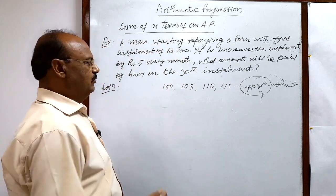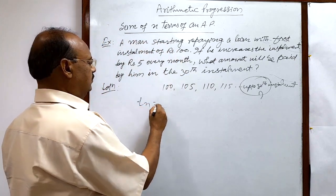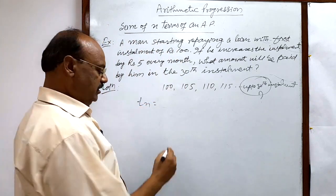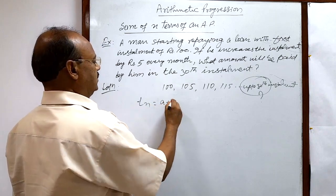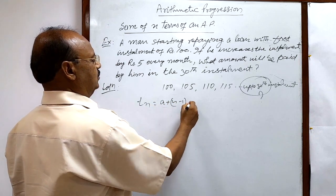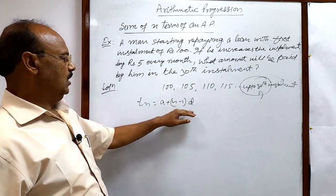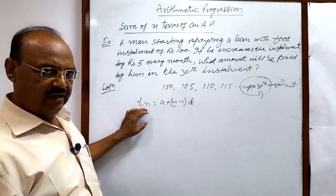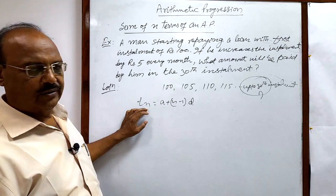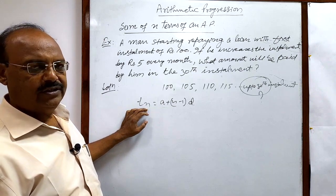Just try to recall the formula: T_n, the nth term, is equal to a plus (n minus 1) into d. By using this formula, we can get the value of T_n that will be the answer to this question. You can get it very easily.